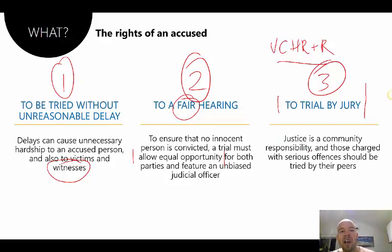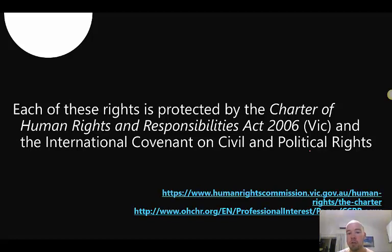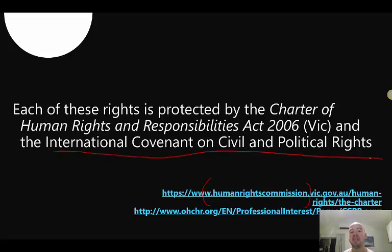Anyone charged with a serious offence — a serious violation of community standards — should be tried by their peers. Each of these rights is in the Victorian Charter of Human Rights and Responsibilities. The easiest way is to Google 'Victorian Charter of Human Rights and Responsibilities' and you'll get the Human Rights Commission website. They're also included in the International Covenant on Civil and Political Rights, which is an international UN treaty that Australia is a signatory of.